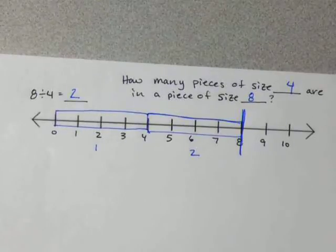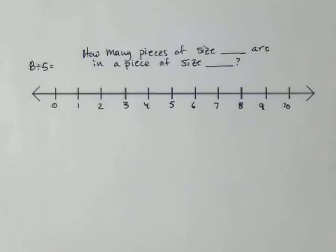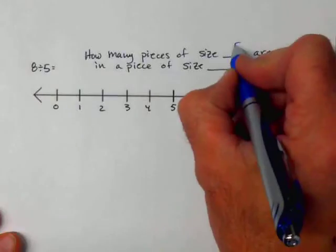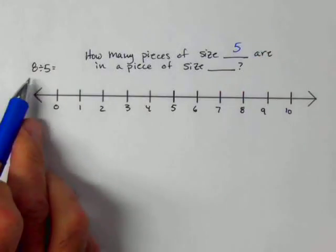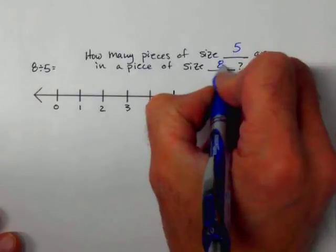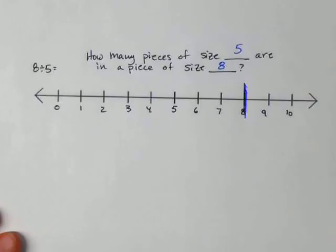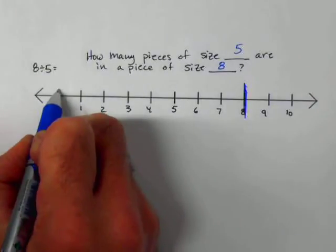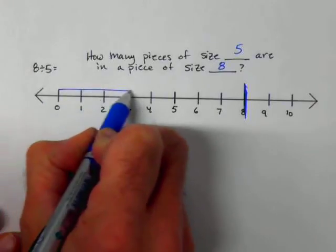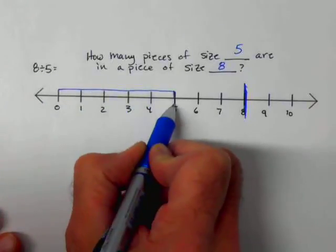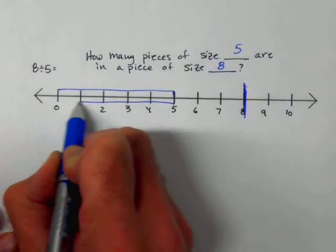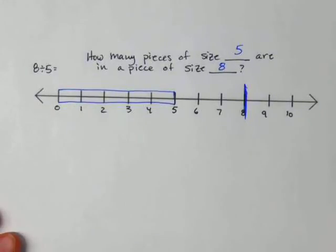Let's look at another example where it's not a whole number result. Here we have 8 divided by 5. How many pieces of size 5 are in a piece of size 8? Again, we're looking at 8 down here — there's our endpoint. We want to figure out how many pieces of size 5. So let's get a piece of size 5: 1, 2, 3, 4 — there's a piece of size 5. 1, 2, 3, 4, 5 — there's one piece of size 5. That's definitely inside.